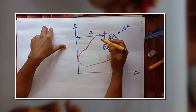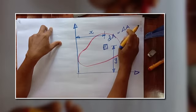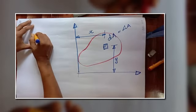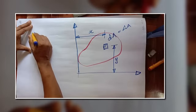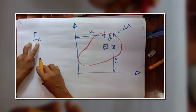Now as per the definition, this is the sum of products of area and the distance square. Whenever you are writing moment of inertia we have to write the axis also, the reference axis.